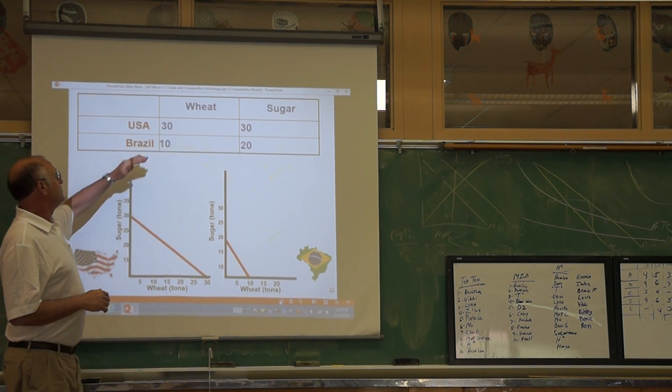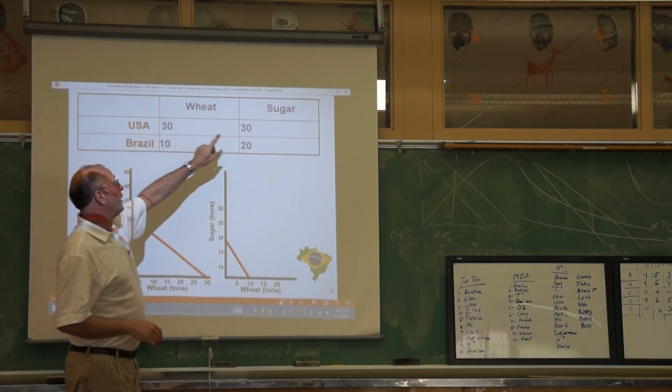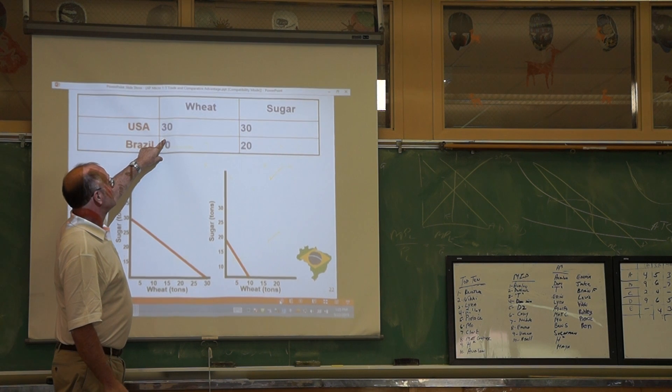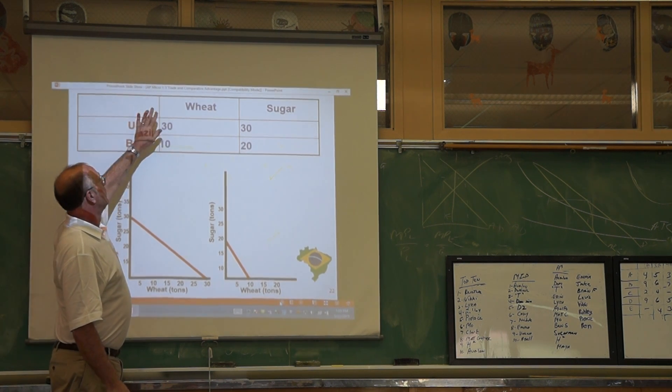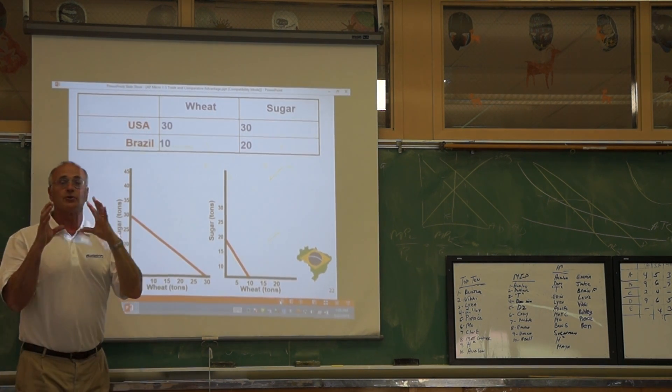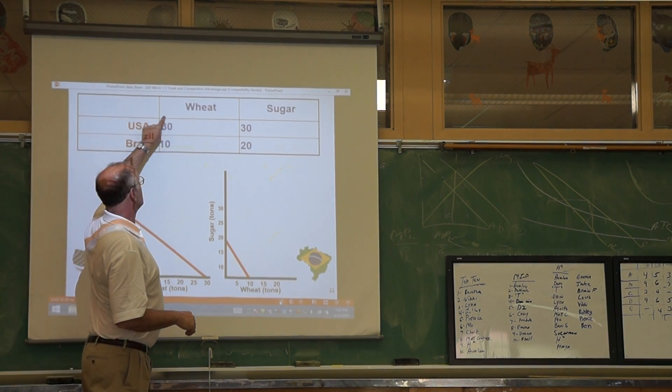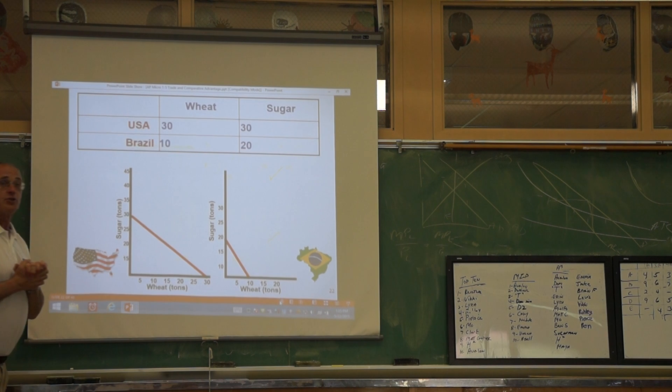Now I look at Brazil. Brazil wheat is 10. I take the other product, sugar, and put it over: 20 over 10 is 2. One is less than 2. One is the lowest number, so it's the lowest opportunity cost. Therefore, the United States has the comparative advantage in wheat.